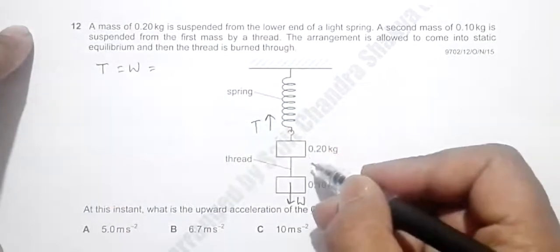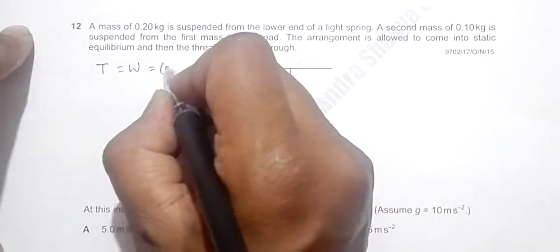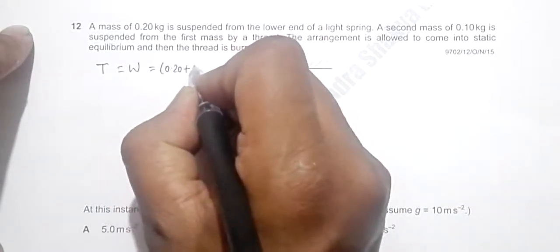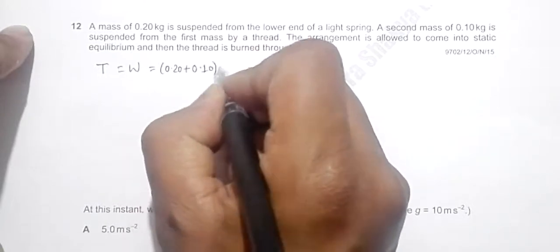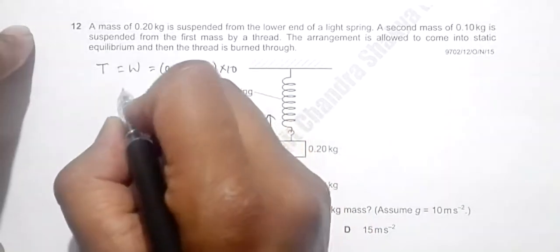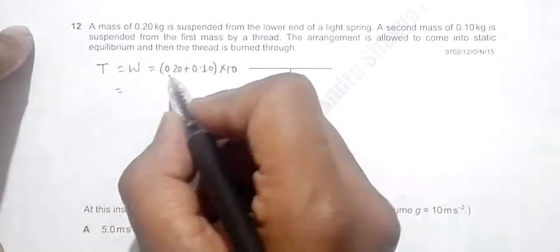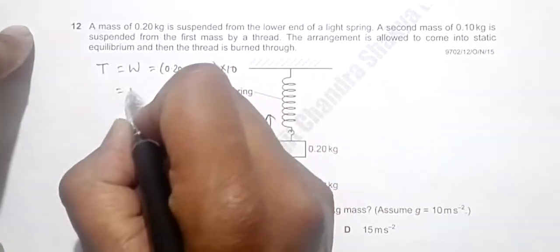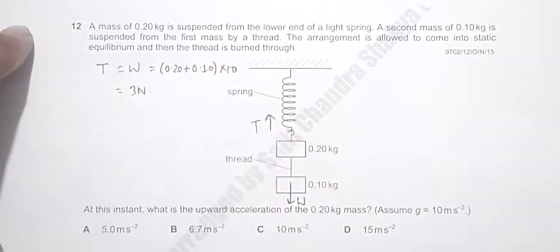So W equals the total mass, 0.20 plus 0.10 into g, that's equal to 0.30 into g, equal to 3 Newton. So the value of this tension force is 3 Newton in upward direction.